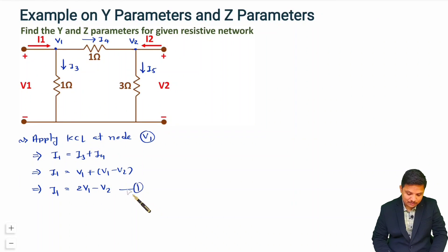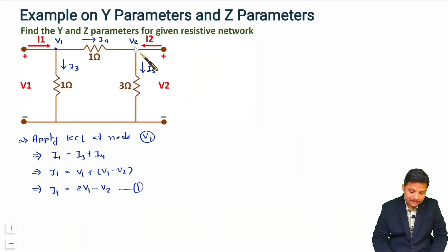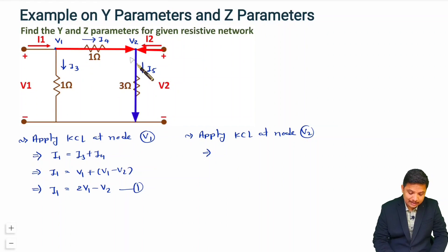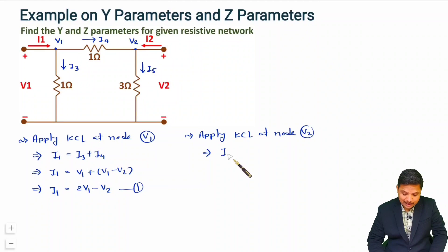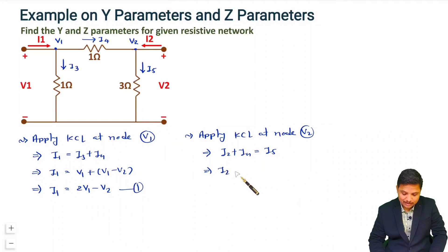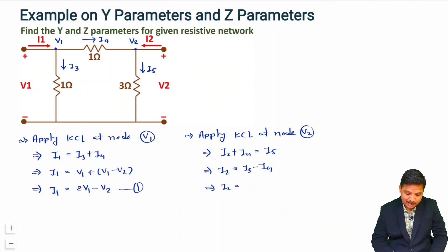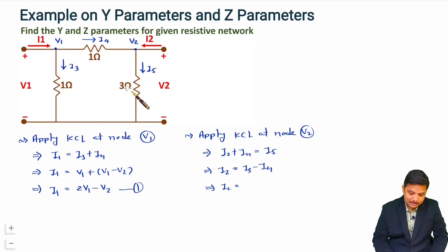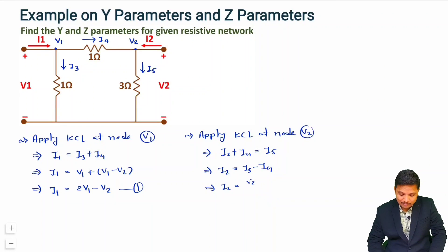This is our first equation, which we can compare with the Y parameter equations. Let me derive the second equation by applying KCL at node V2. Entering currents are i2 and i4, and leaving current is i5. So we need to form an equation for i2: i2 = i5 - i4. Now i5 occurs in this branch: tail voltage V2 minus head voltage (ground), so i5 = V2 / 3.